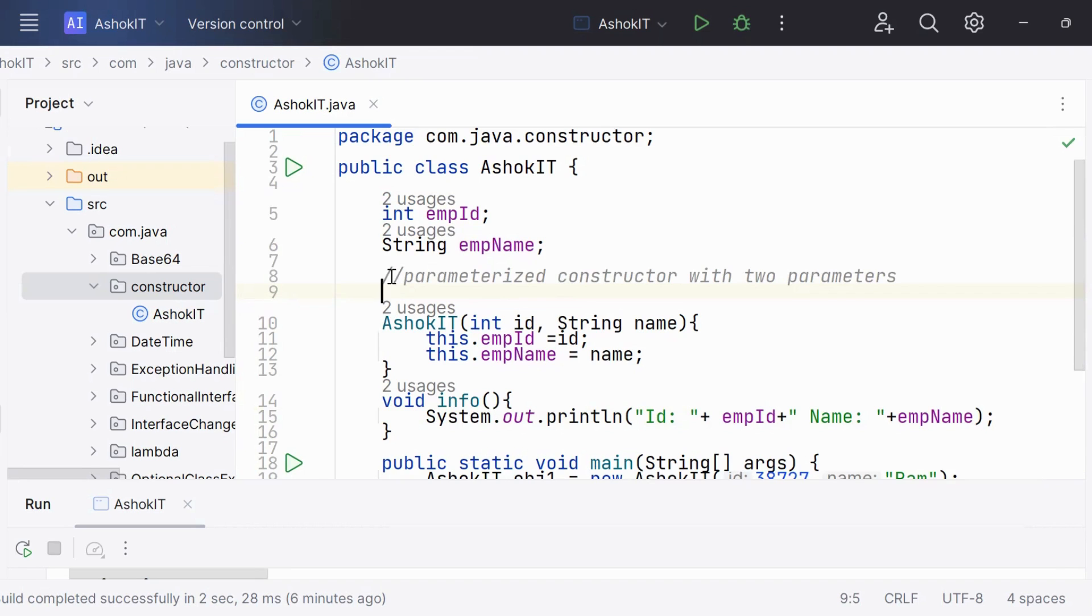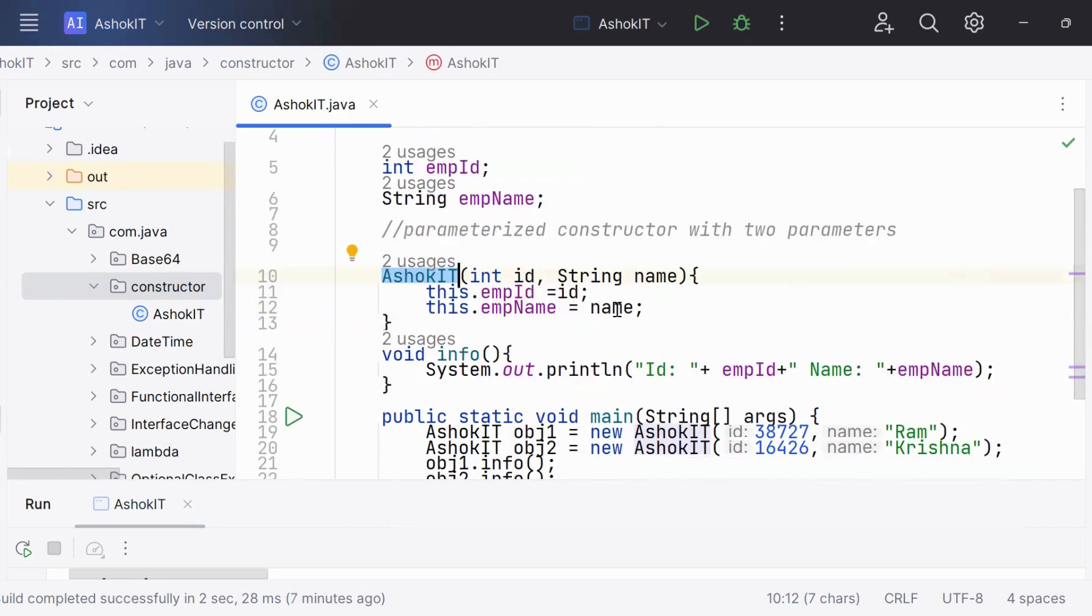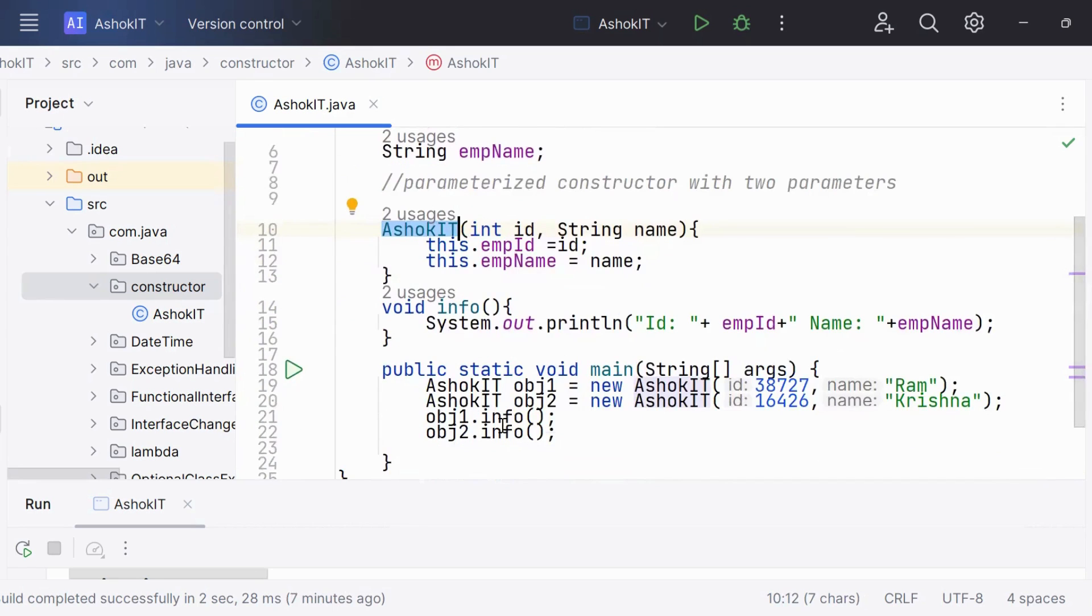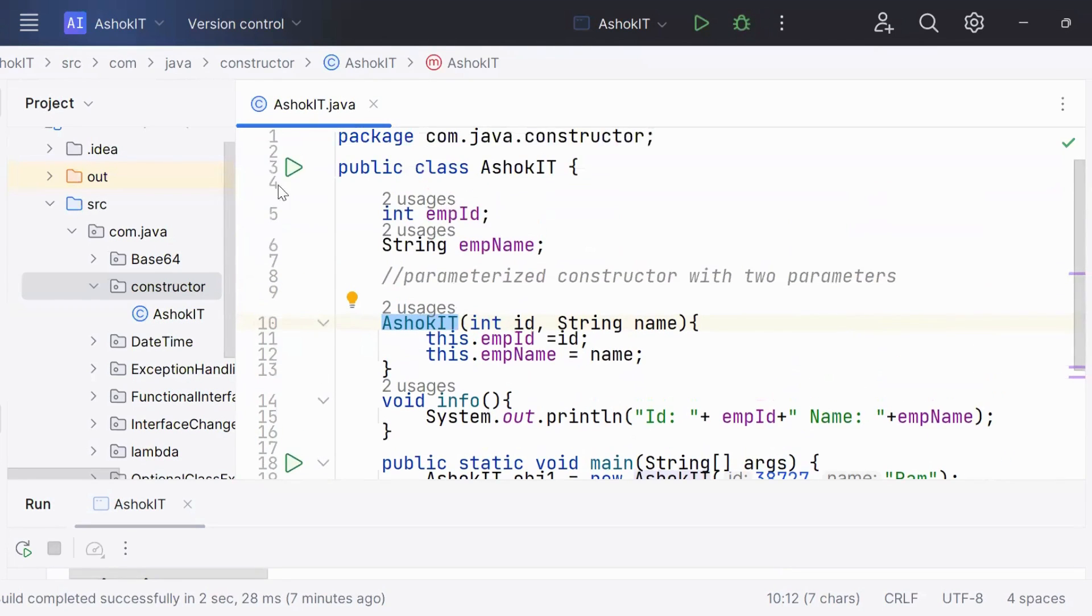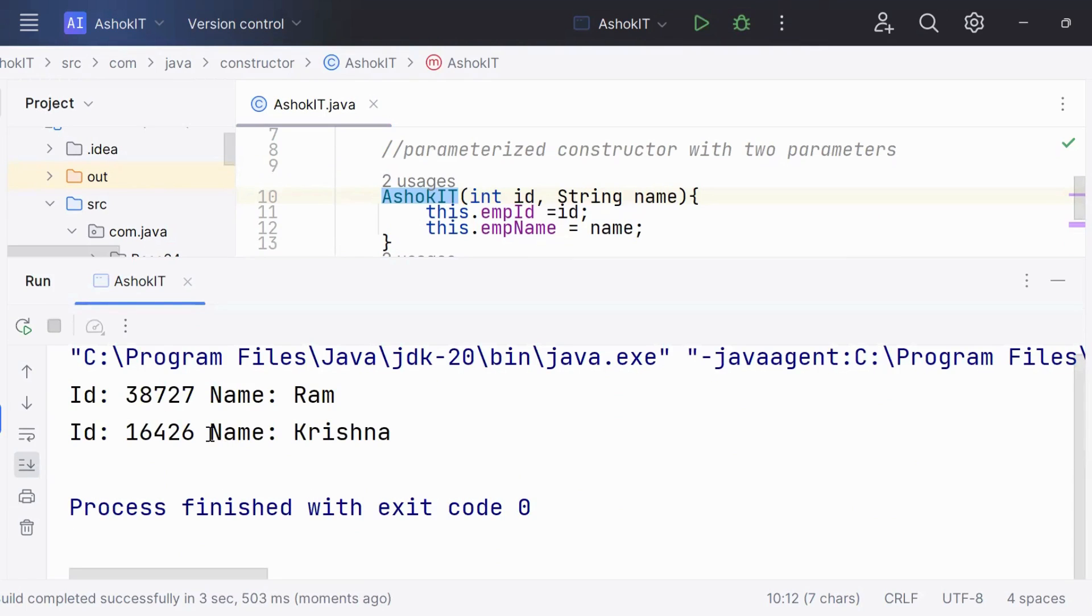In this particular code, we can see the class name is AshokIT and the constructor called is also with the same name. Here, I'm creating two parameters: ID and name of the employee. I'm invoking the constructor and creating two objects, object one and object two, with the ID of the employee 387277 and name as Ram, and ID two is 16426 with name as Krishna. Now let's run this program and see the output.